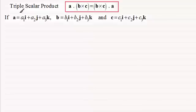So if we let A, B, and C be the three vectors with components A1, A2, A3, B1, B2, B3, and C1, C2, C3 respectively.